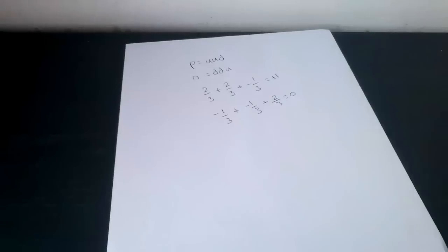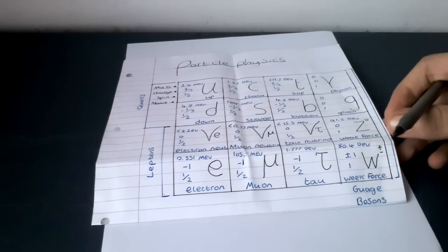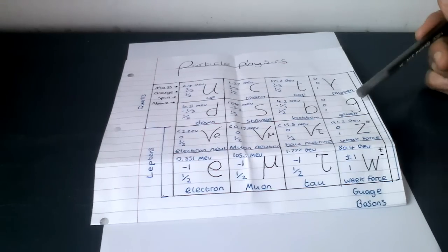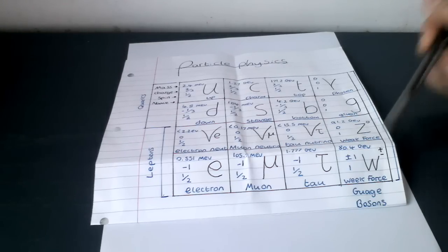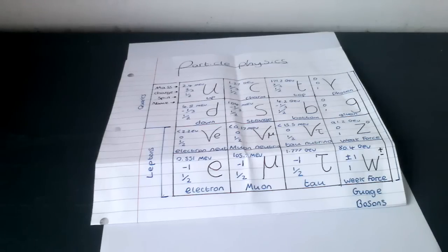Now we're going to move onto bosons. Gauge bosons include the photon, the gluon, the Z boson, and the W plus and minus. Bosons are particles that carry the 4 fundamental forces. The 4 fundamental interactions of nature are the gravitational interaction, the electromagnetic interaction, the weak interaction, and the strong interaction.